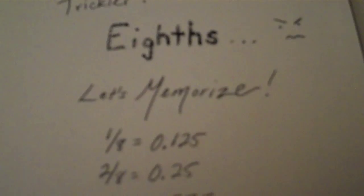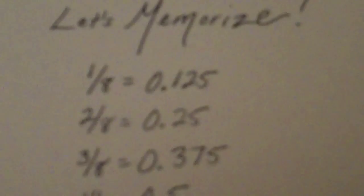One eighth is 0.125. Two eighths is 0.25, or a fourth. Three eighths is 0.375. Four eighths is 0.5, or one half. Five eighths is 0.675, or six hundred and seventy five thousandths if we say this correctly. Six eighths is seventy five hundredths. Seven eighths is eight hundred and seventy five thousandths. And eight eighths is one whole.